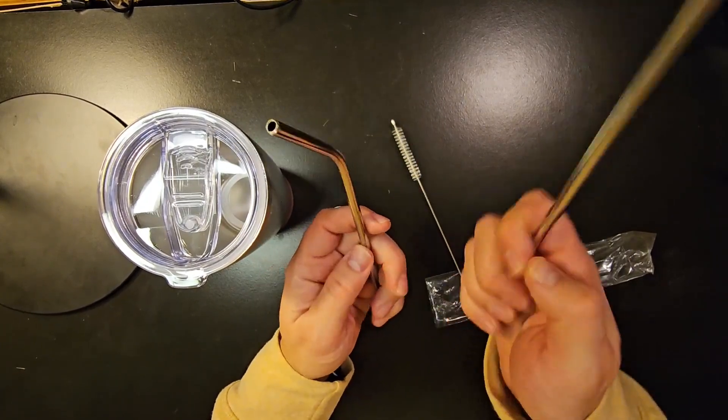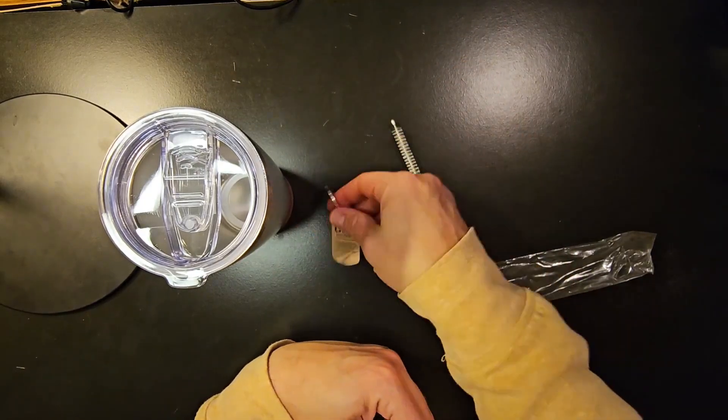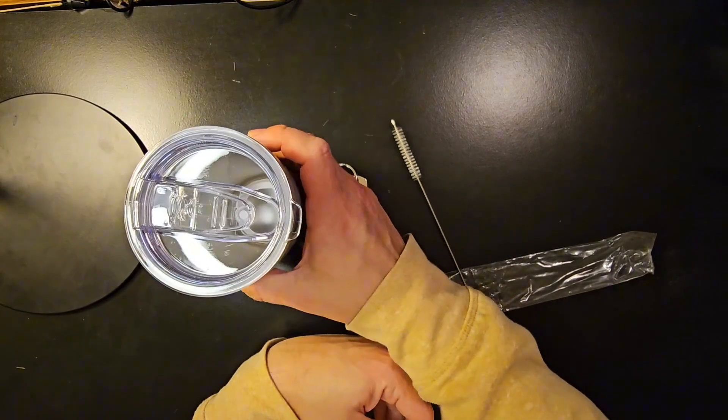So just a neat little tumbler cup set with two straws, one a straight straw, one that is bent on the end, and then you've got this keychain that has the same quote as what's on the tumbler cup.